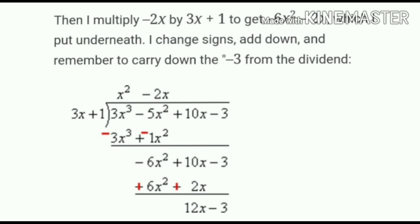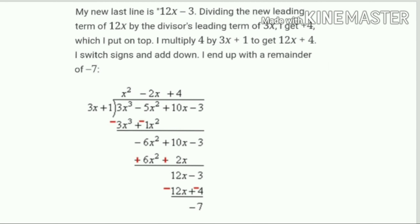We change signs for subtraction: -6x² becomes +6x², so -6x² and +6x² cancel. Then +10x and +2x combine to give 12x. Bringing down -3, we divide 12x by 3x to get 4. Multiplying: 4 × (3x+1) = 12x + 4. Changing signs: 12x cancels, and -3 - 4 = -7. So the remainder is -7.